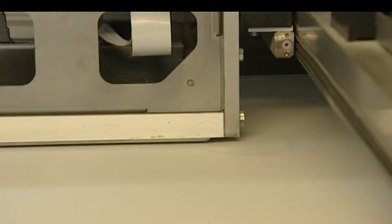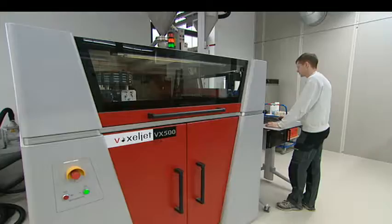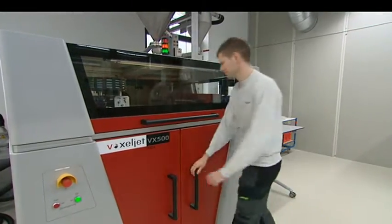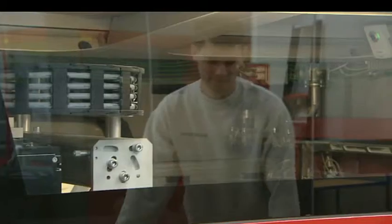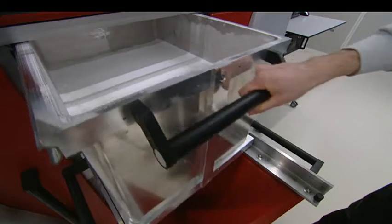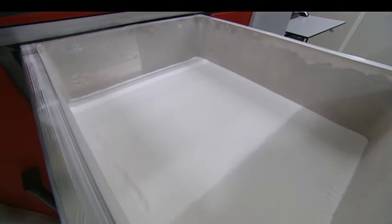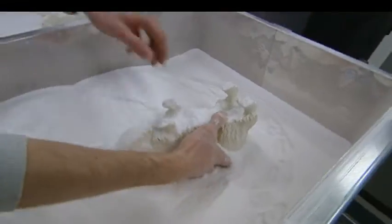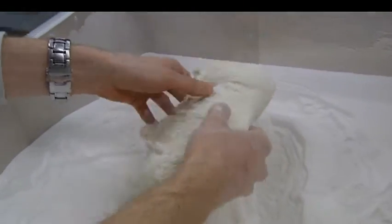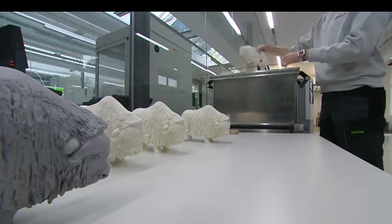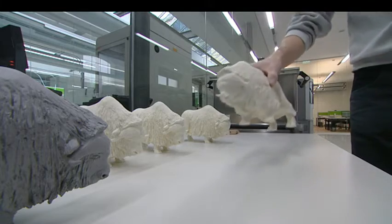Here too, the 3D printer uses a layer-by-layer technique. The final product is created in the powder. All leftover material can be used again for the next print. The musk ox is a success, a perfect copy of the original.